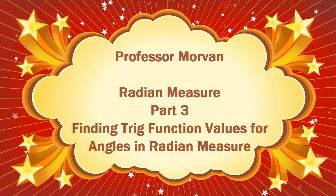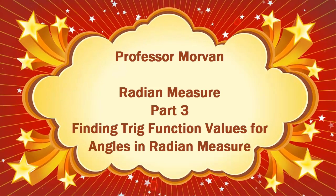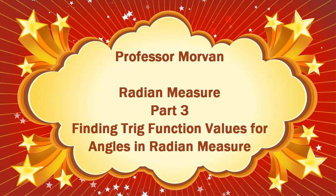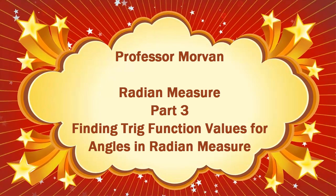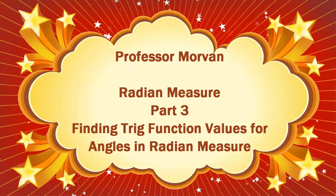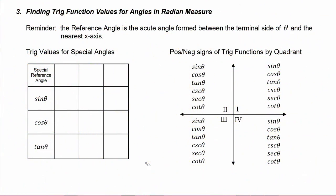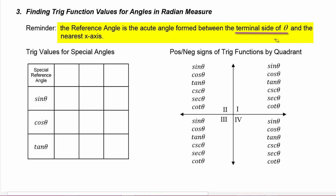In part three of our lesson on radian measure, you're going to get experience finding trig function values for angles in radian measure. A quick reminder that the reference angle is the acute angle formed between the terminal side of theta and the nearest x-axis.